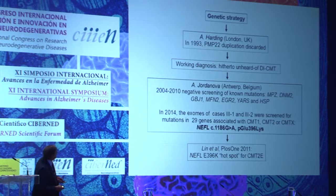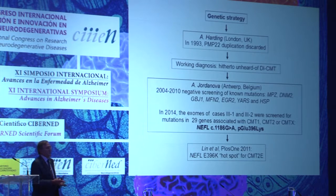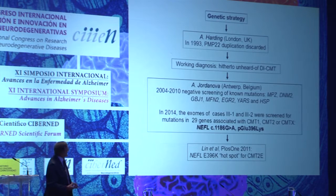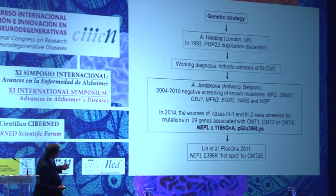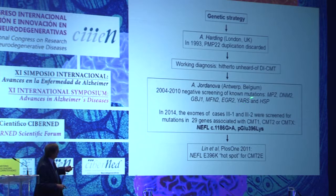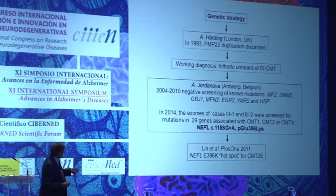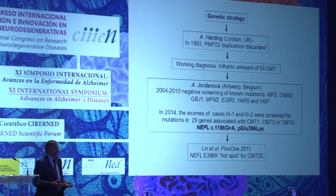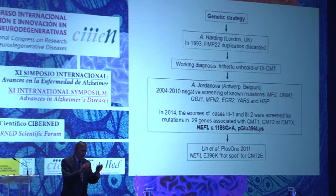This is the genetic strategy followed over the last 22 years. In 1993 we discarded PMP22 and connexin 32, the only mutations known at the time. Our working diagnosis was dominant intermediate CMT. Between 2004 and 2010, Alvina Jordanova carried out screening of known mutations associated with axonal and demyelinating genes including MPZ, dynamin 2, connexin 32, mitofusin 2, EGR2, YARS, and HSP. Finally in 2014, the exomes of two cases were screened for 29 mutations associated with CMT1, CMT2, and CMTX. We found the current NEFL mutation, which we now know is a hotspot of the gene.